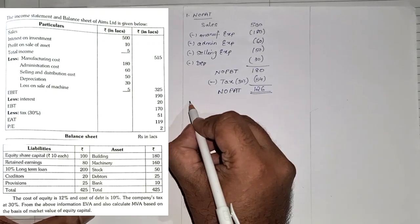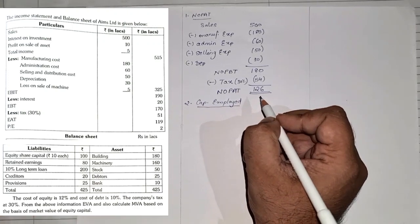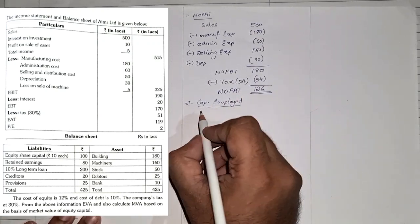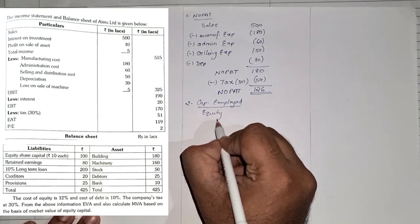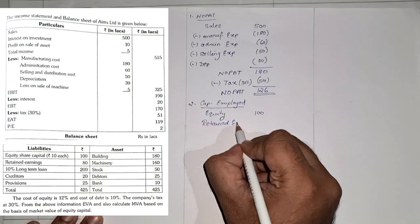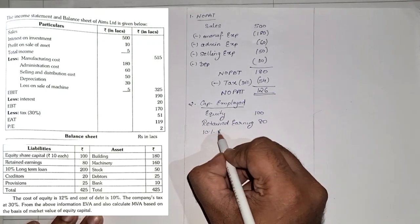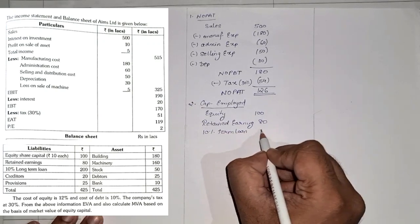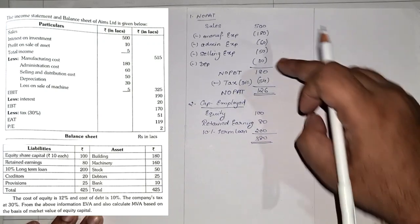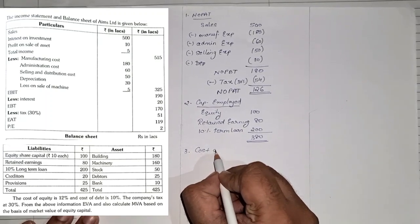Step 2: Find Capital Employed. Capital Employed = Equity + Retained Earnings + Debt. From the balance sheet: Equity Capital = 100, Retained Earnings = 80, and 10% Long-Term Loan = 200. Total Capital Employed = 380 lakhs.